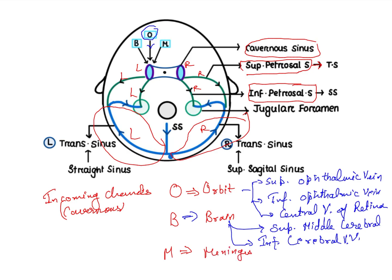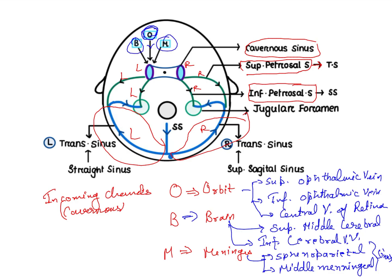M stands for meninges. From the meninges, the tributaries draining into the cavernous sinus include the sphenoparietal sinus and the middle meningeal sinus. So using the mnemonic OBM — Orbit, Brain, Meninges — we can remember all the incoming channels or tributaries of the cavernous sinus.